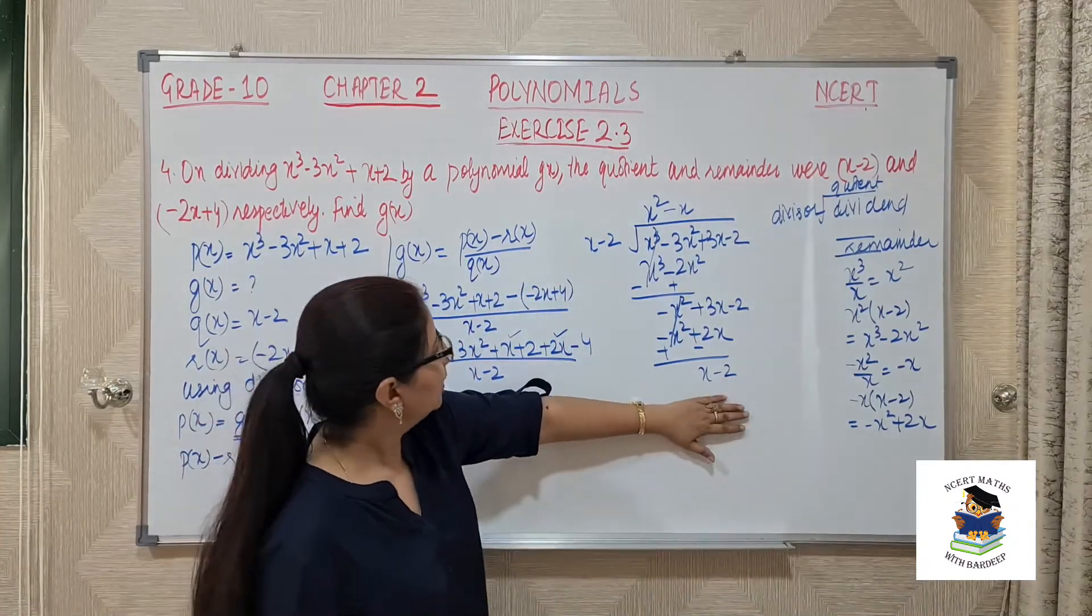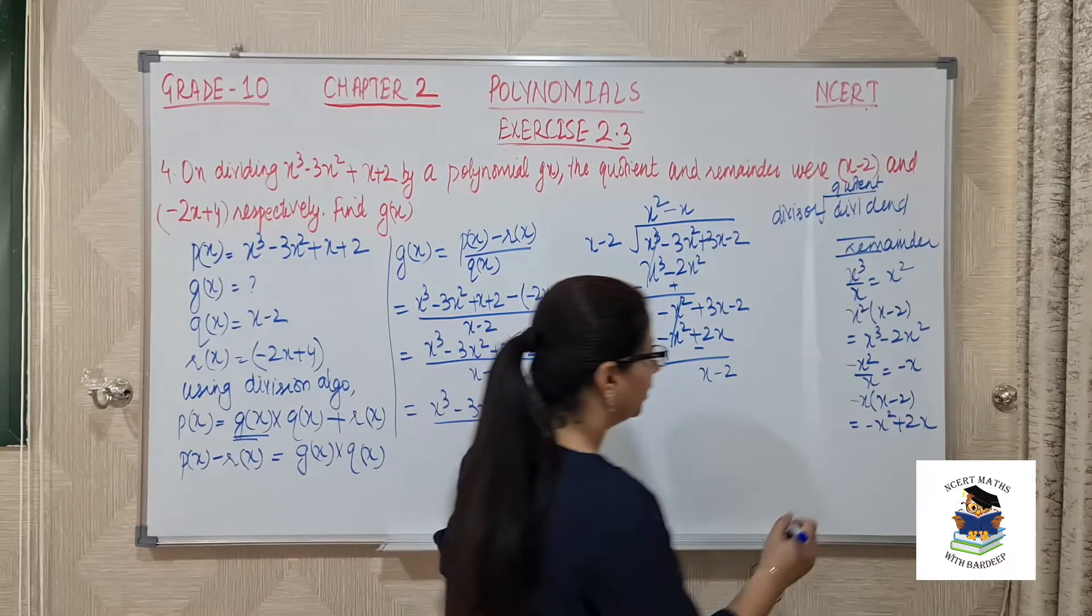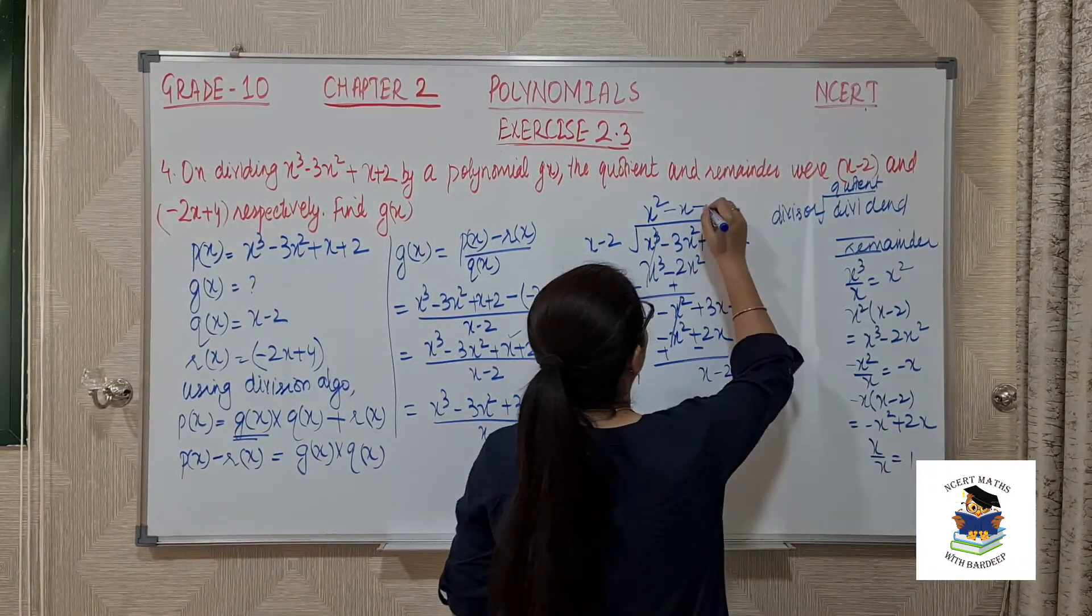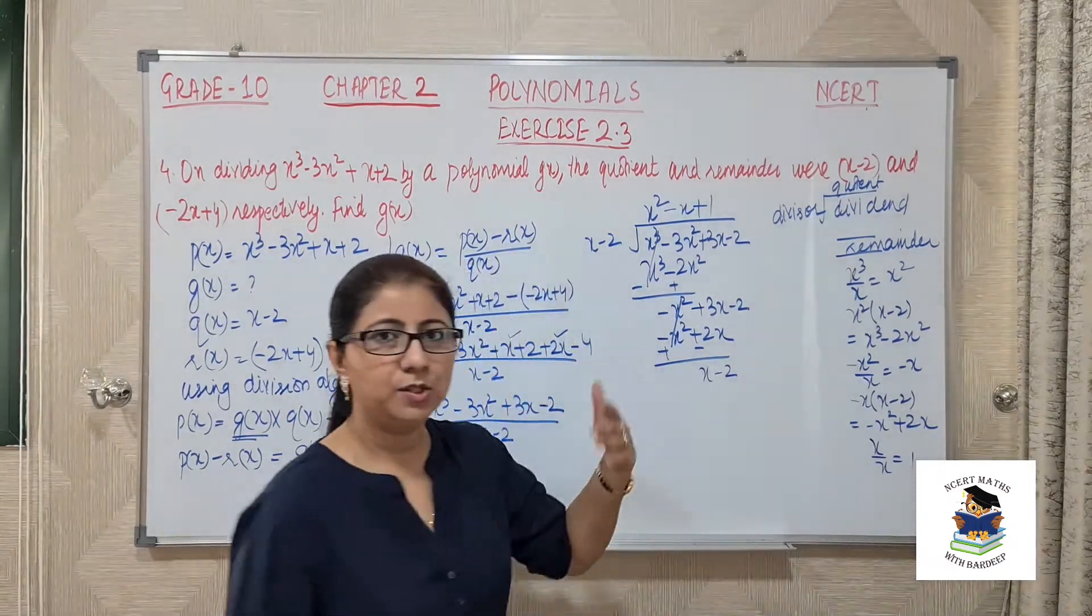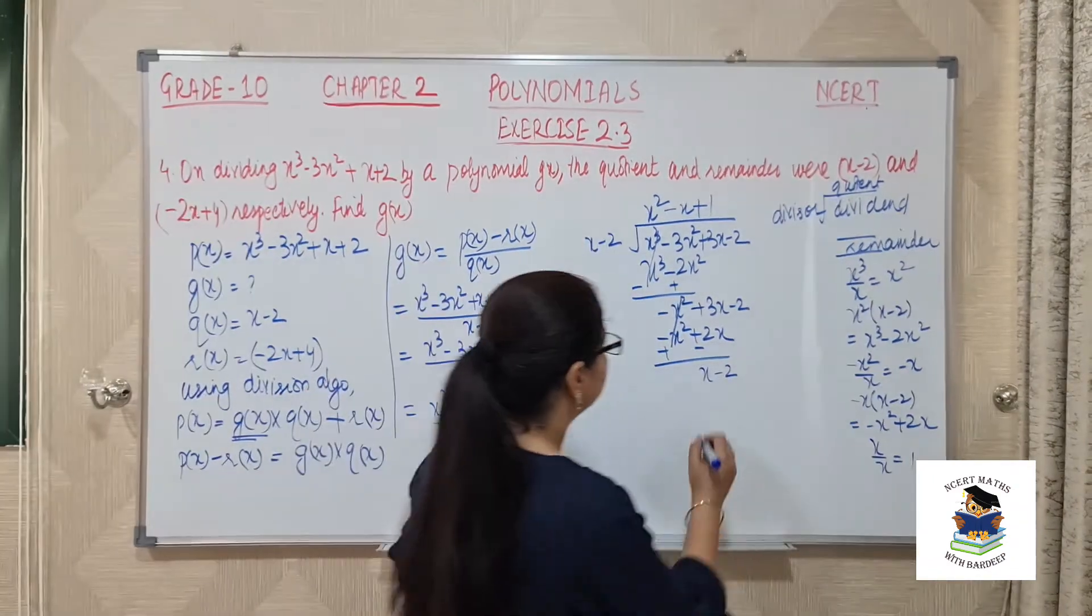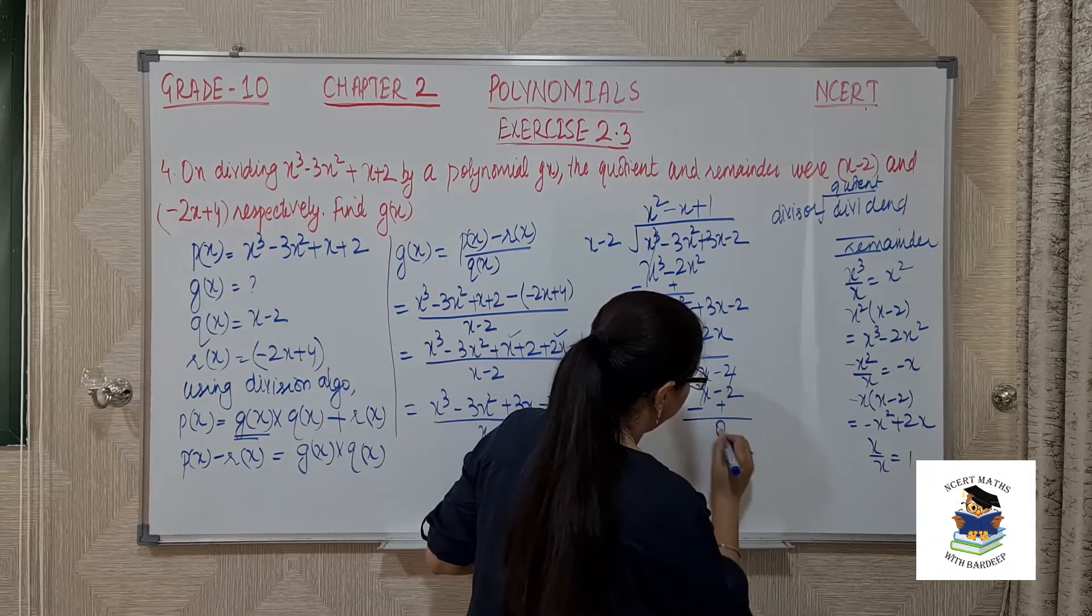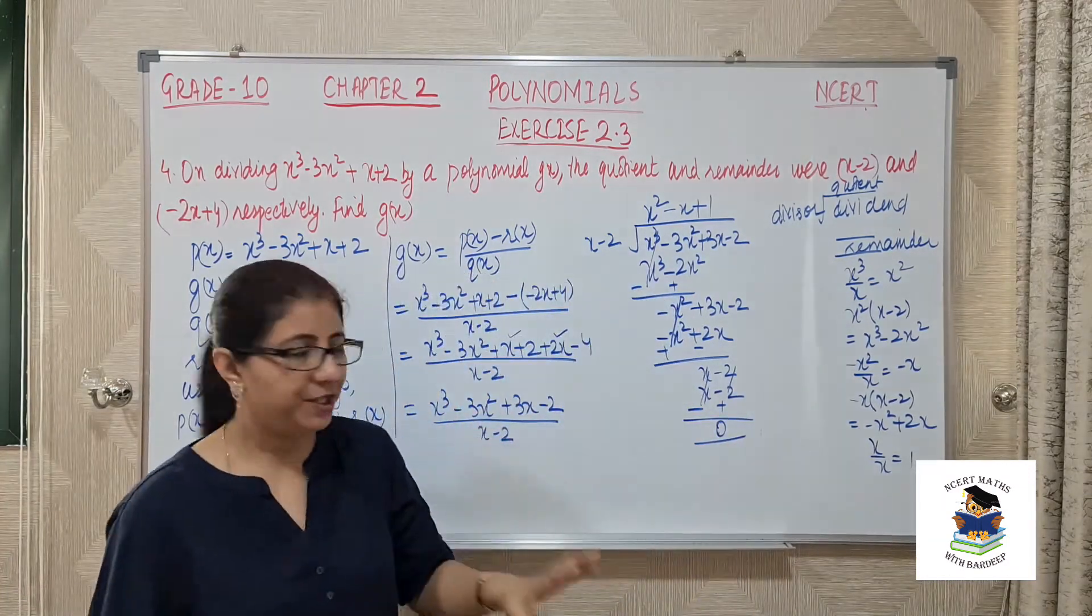Again this x and this x has same powers, so again we should divide x by x, we are getting 1. This 1 multiplied by x minus 2 will give me the same terms. Change the signs, cancel them, and remainder is 0.